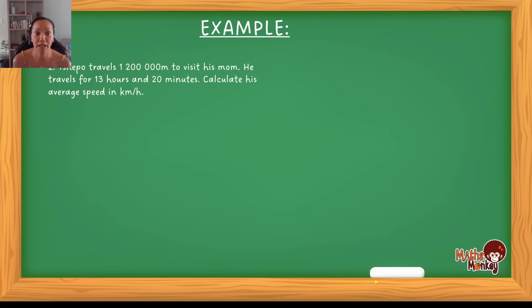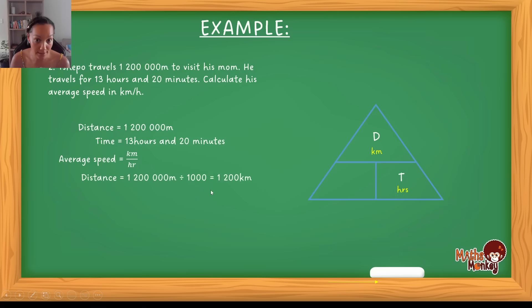In the second example now, we're going to look at the scenario. So Tsepo travels 1.2 million meters to visit his mom. He travels for 13 hours and 20 minutes. Calculate his average speed. So now we break down, what do we have? We've got distance in the question, and we've got the time. So based on our triangle, that means if we have distance and time, they are asking us to calculate the speed. And how do we calculate the speed? It's the distance over the time. Now, when we're calculating the average speed, you will remember I mentioned that the units should be the same. So if I want to calculate the average speed in the unit they're asking, which is kilometers per hour, then that means my distance needs to be in kilometers, and my time needs to be in hours. So that's what we're going to do. We're going to convert the distance into kilometers.